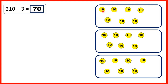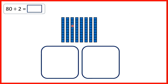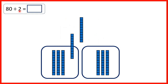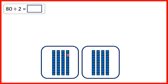So here we were using place value counters, but we could also show the divisions that we completed using base 10 blocks. So with 80, we have 8 tens, and for this first question we were dividing by 2, so we can share these blocks between 2 groups. We have 4 tens in each group, so that's 40.